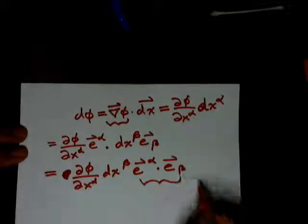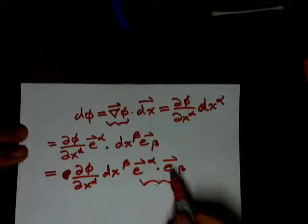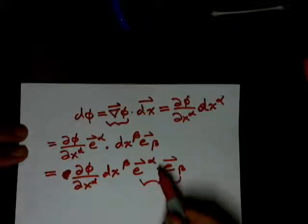And right here, this is our Kronecker delta, where when they're equal, it's equal to 1, and when they're not equal, it's equal to 0.